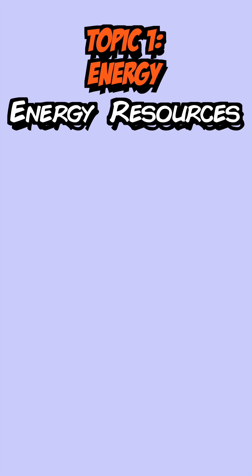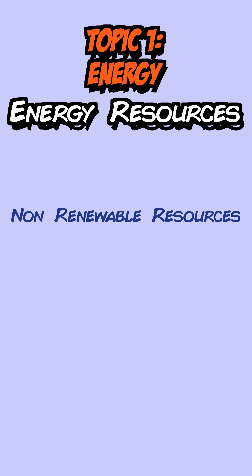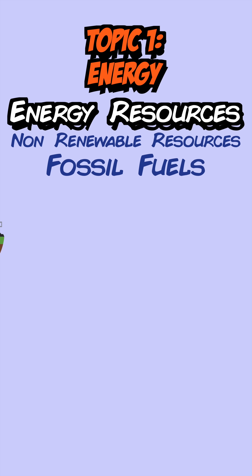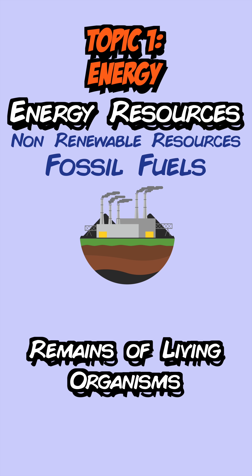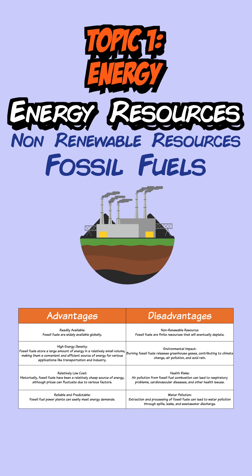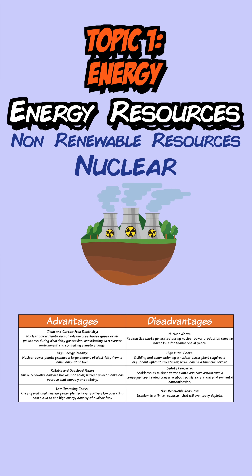Energy resources are all about ways that we generate electricity. We have non-renewable energy resources, which will eventually run out and cannot be reused, and renewable ones that can be reused. In non-renewable resources, we have fossil fuels — coal, oil and gas — made from the remains of living organisms that died millions of years ago. They produce a lot of energy but also produce carbon dioxide, a greenhouse gas, which can lead to global warming. The other non-renewable resource is nuclear energy, which releases energy from nuclear reactions; it produces a lot of energy and no carbon dioxide, but it does produce nuclear waste which is expensive to dispose of.